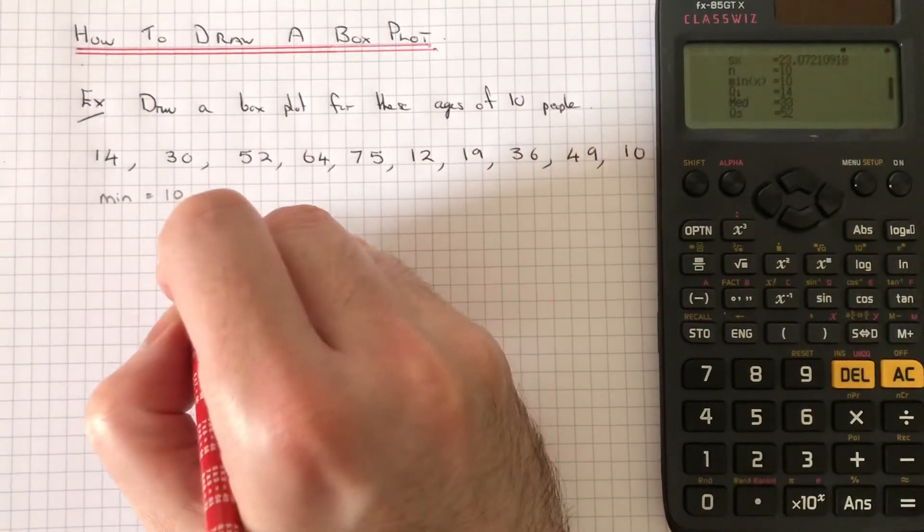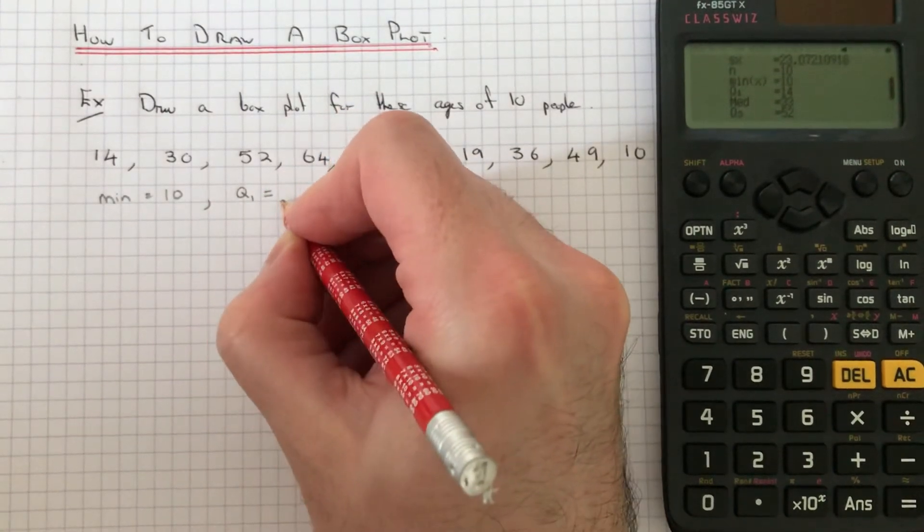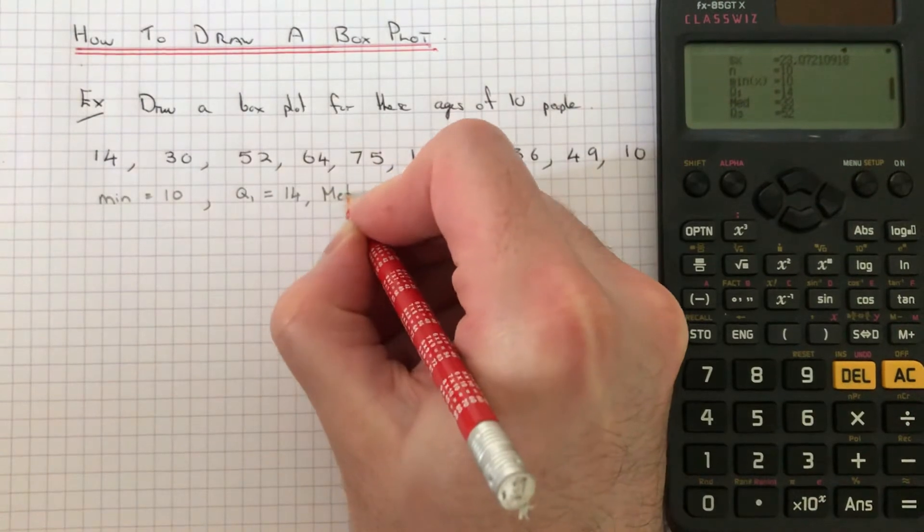Right, we've got Q1, the lower quartile, which is 14. Then we've got our median, Q2, which is 33.